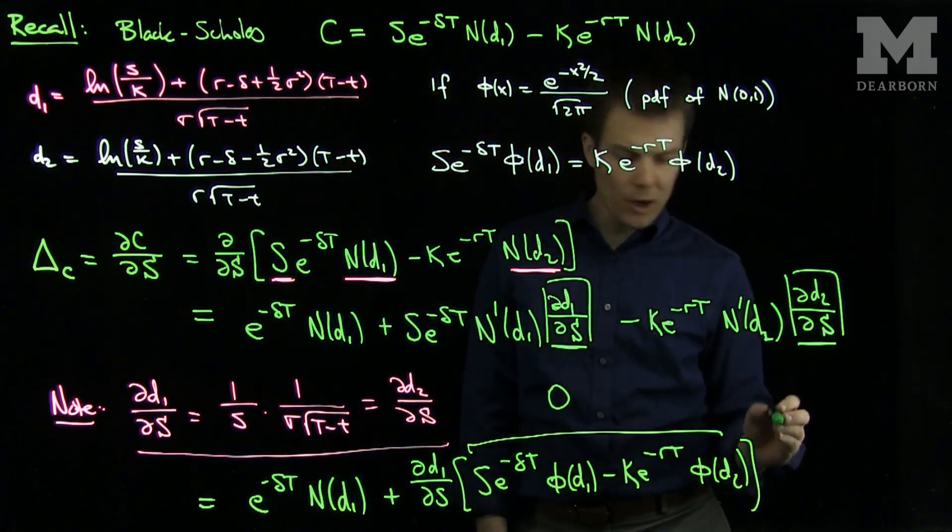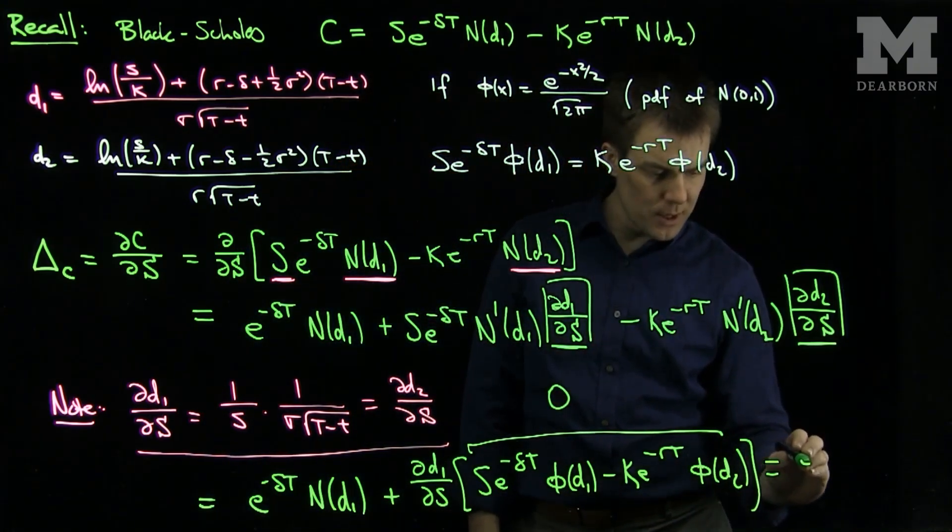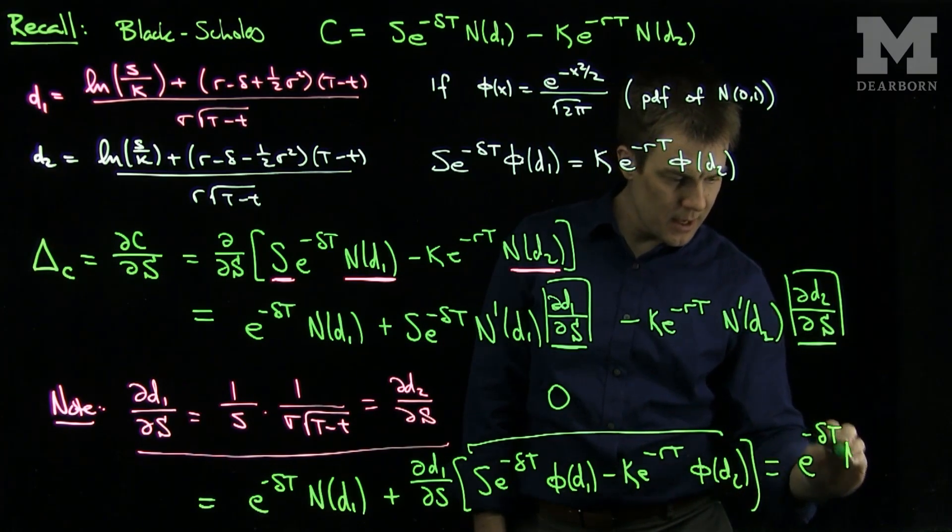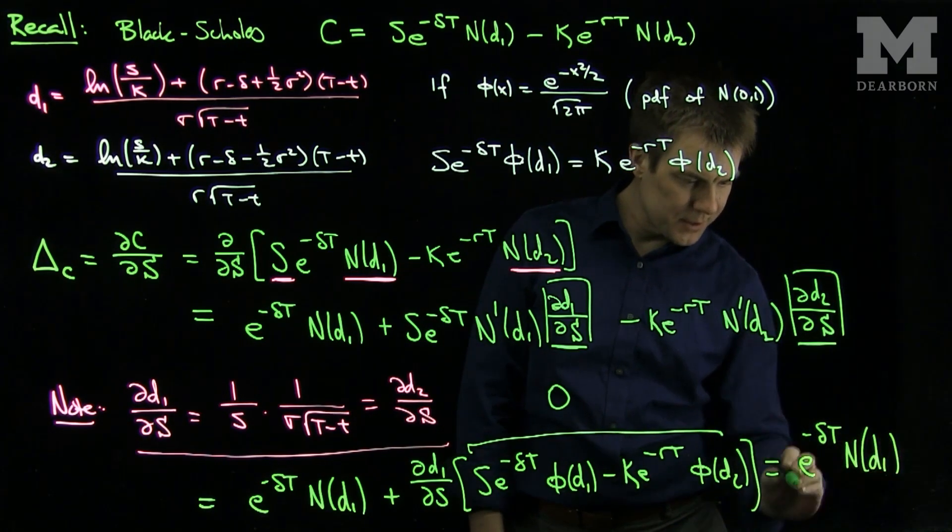So we see that the delta of a call option is exactly equal to e to the negative delta t n of d1.